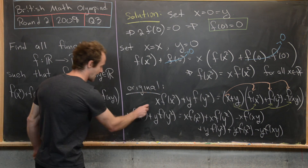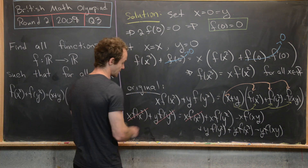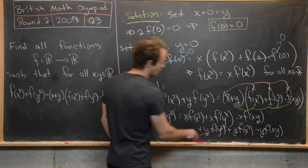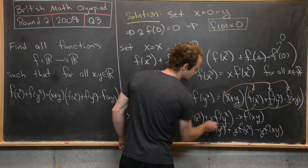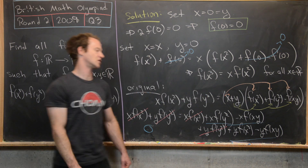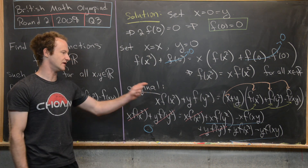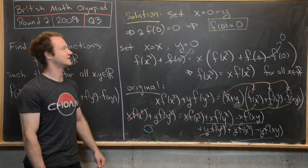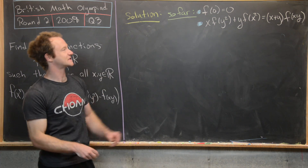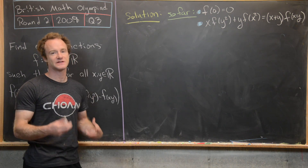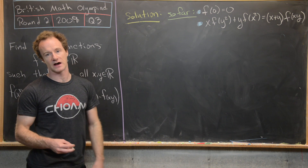After cancellation, we're left with four terms on the right hand side. Cleaning this up gives us our third useful equation. So far our function must satisfy: f(0) = 0, f(x³) = x·f(x²), and this new relation involving f(x²), f(y²), and f(xy).